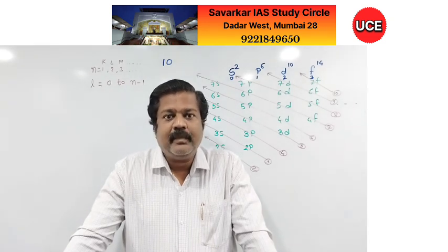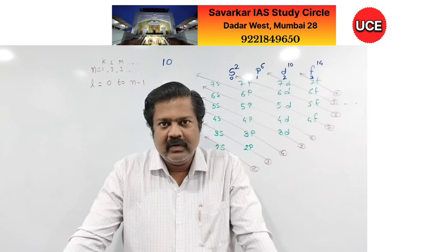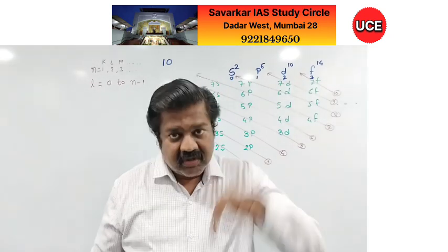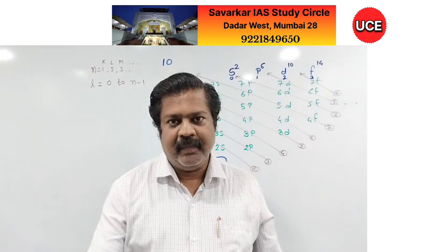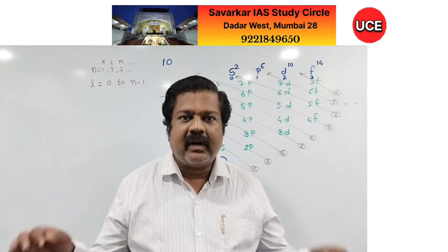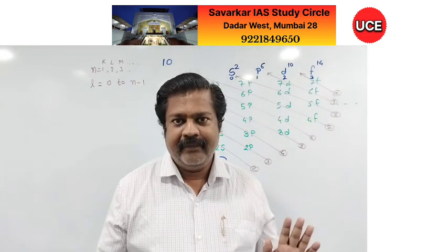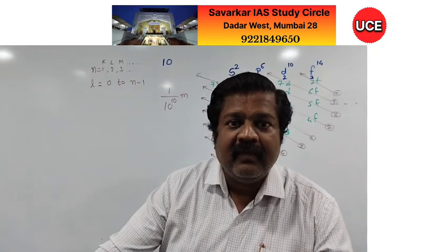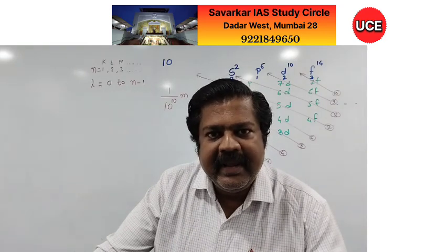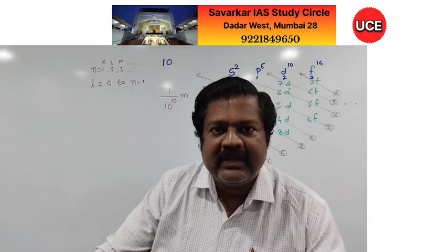According to Heisenberg's Uncertainty Principle, it is difficult to locate an electron. Either we can determine the exact position or the exact momentum of an electron, but not both. What we can locate is the region where the electron-finding probability is maximum.